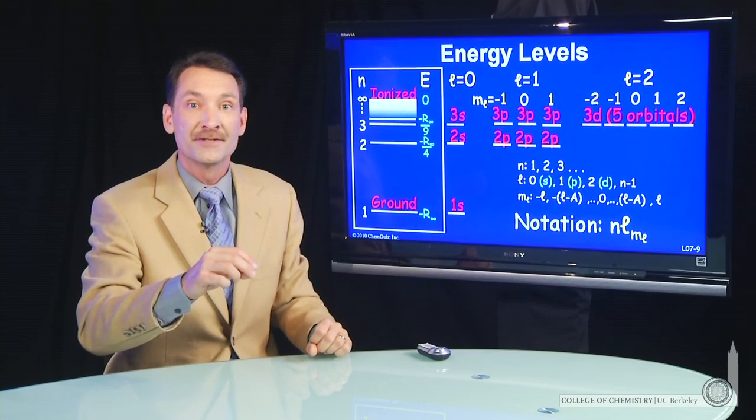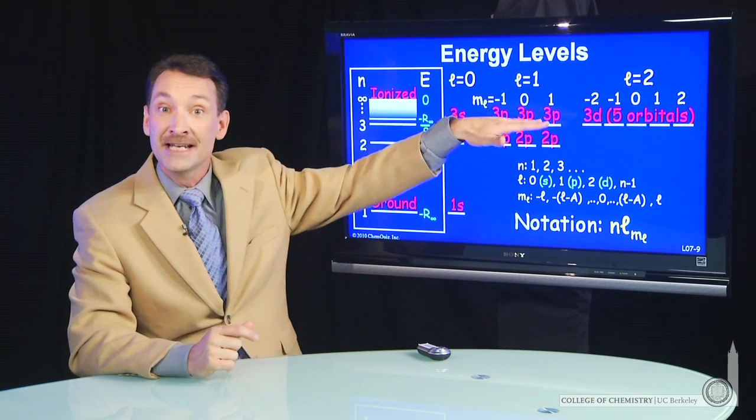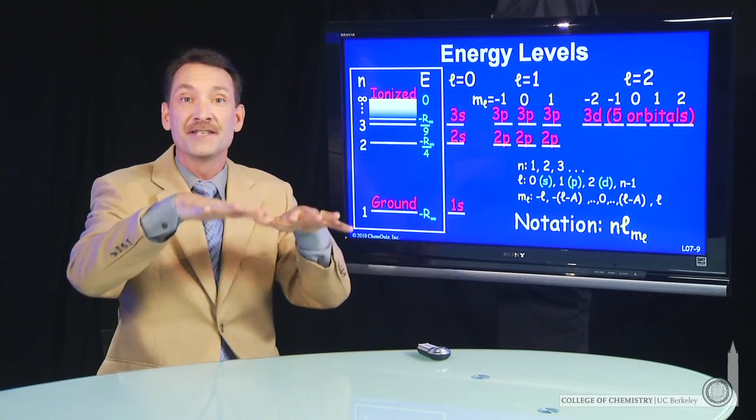If you start adding more electrons, those energy levels are perturbed slightly. And within n equals 2 and within n equals 3, you'll get differences in energy.